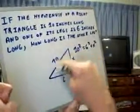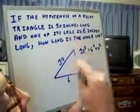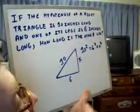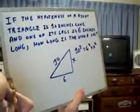This is your hypotenuse right here. This is a right-angled triangle. This is your hypotenuse. One side is six inches long. What about the other side?